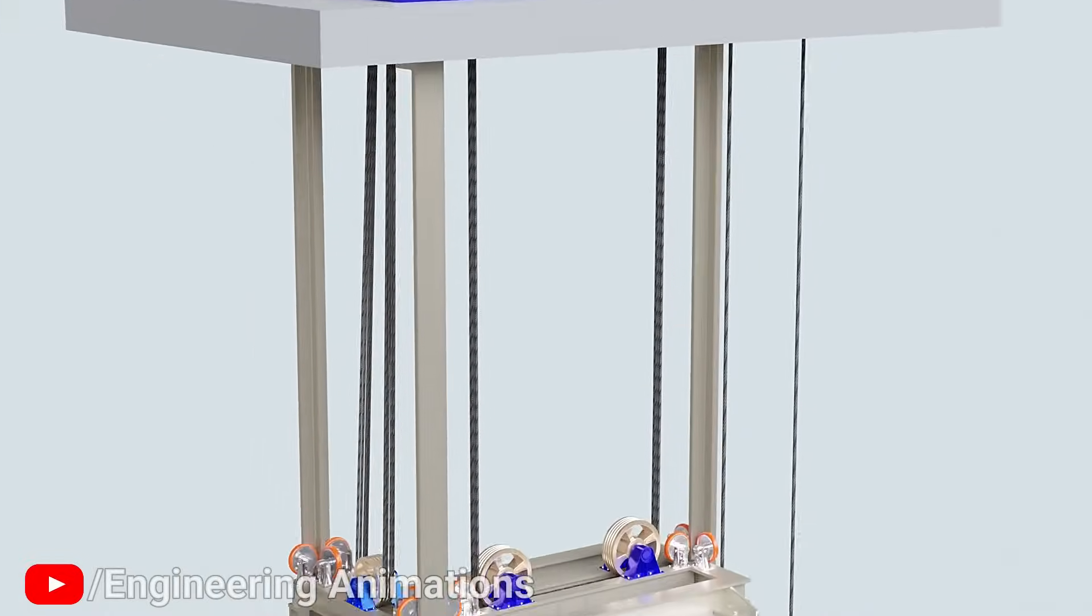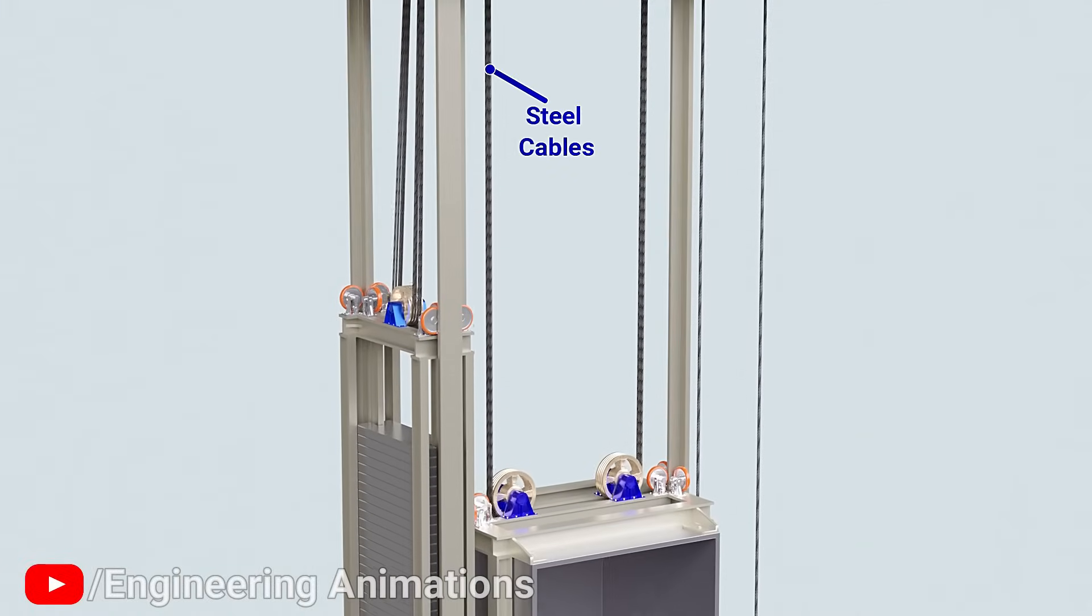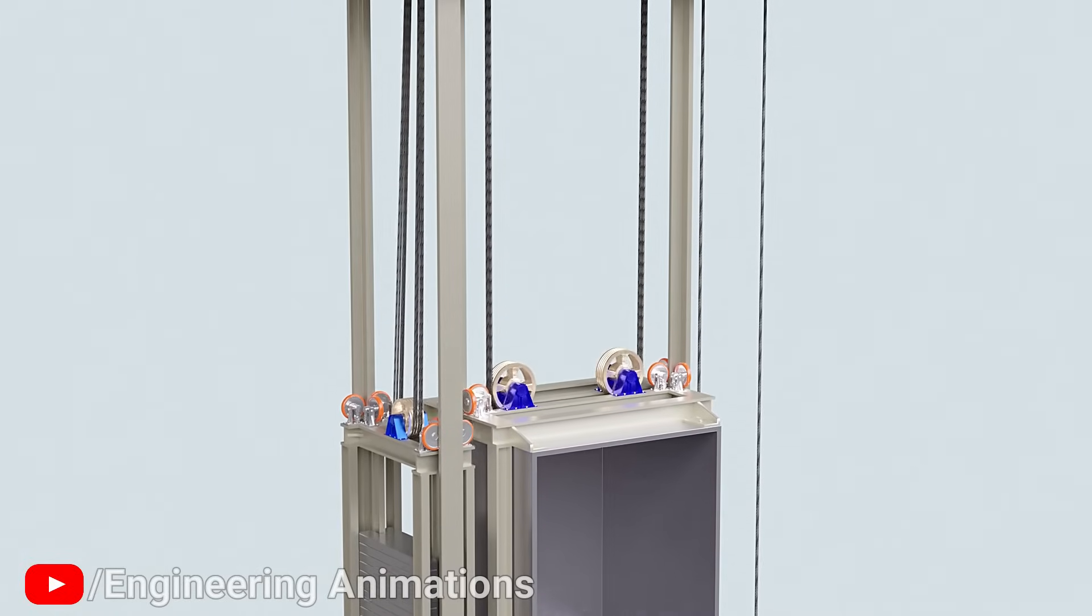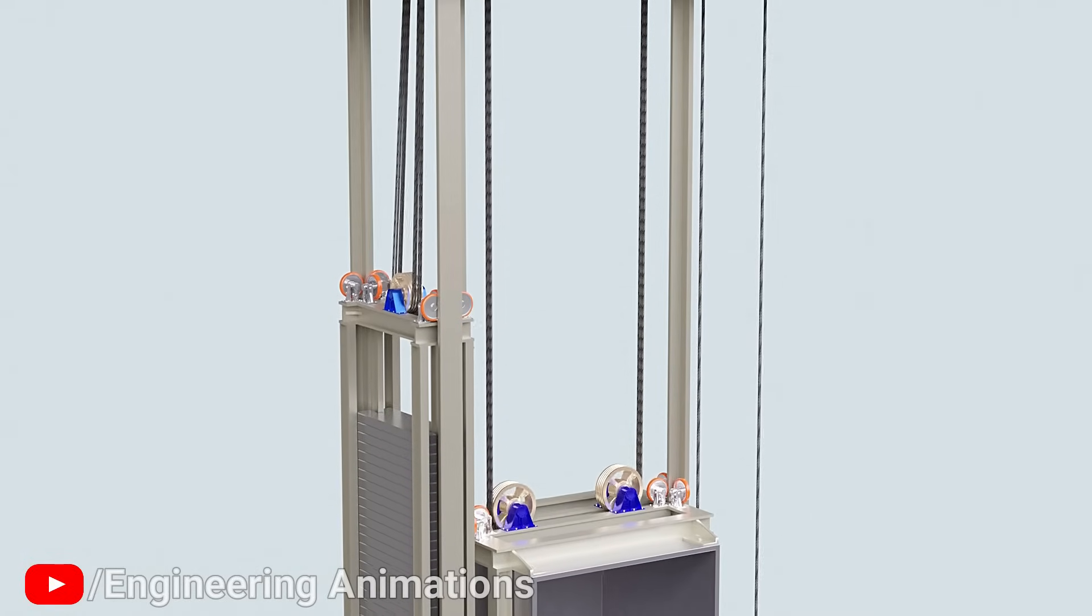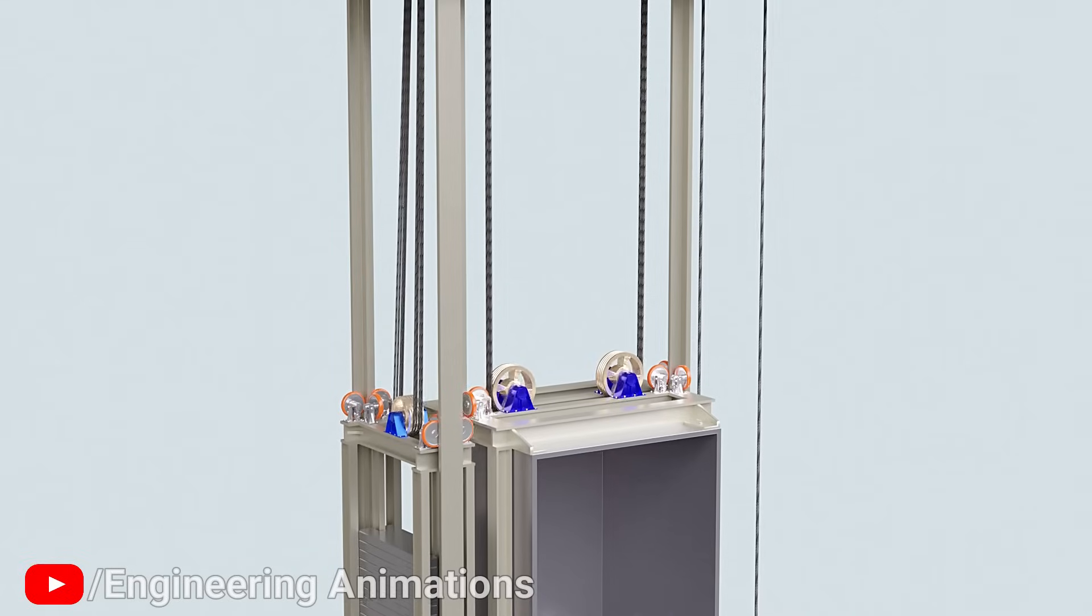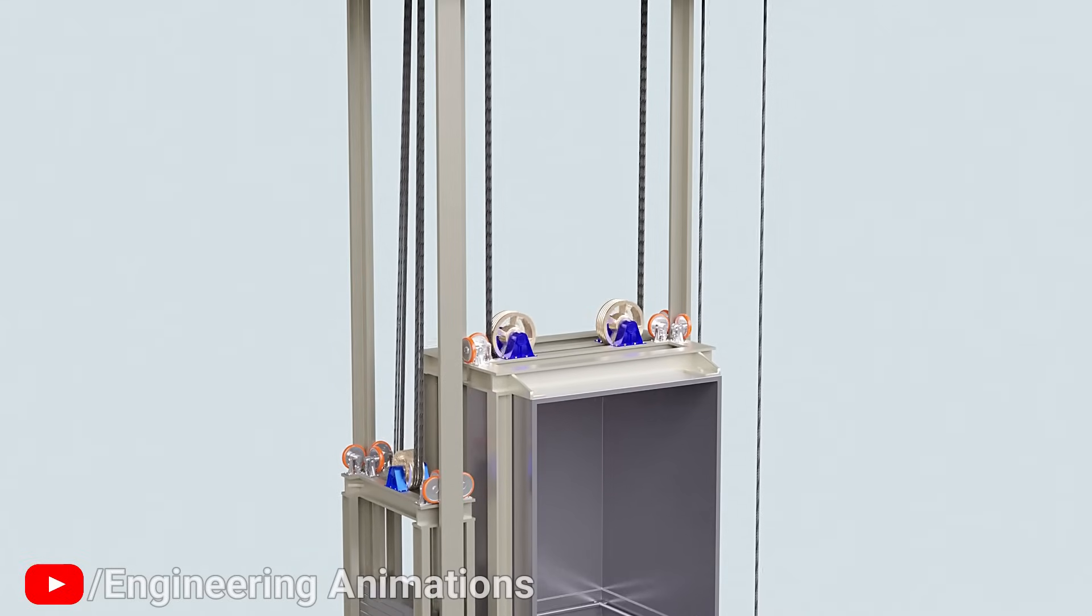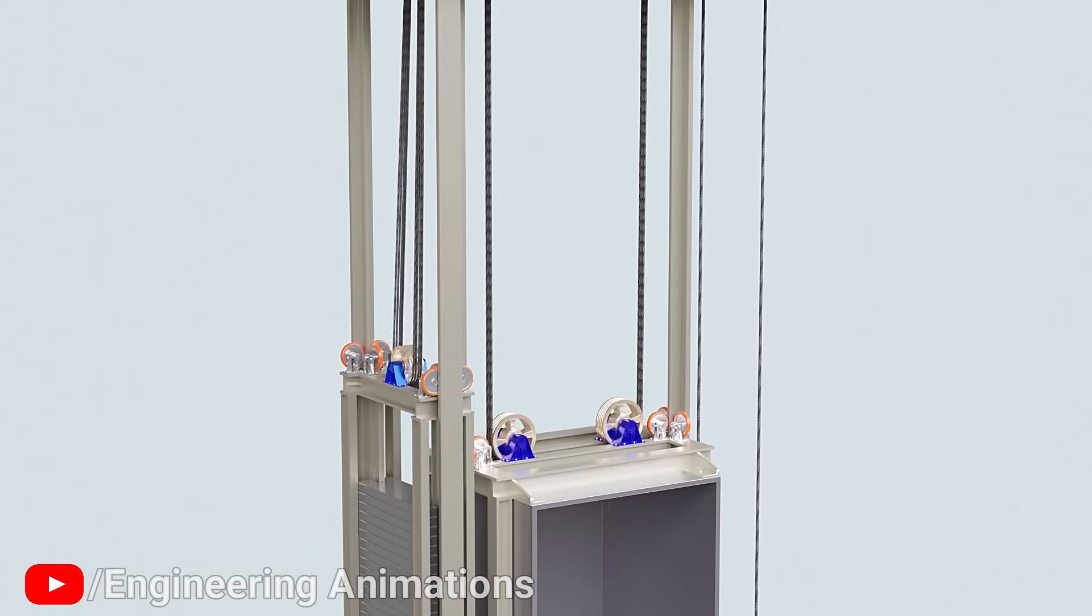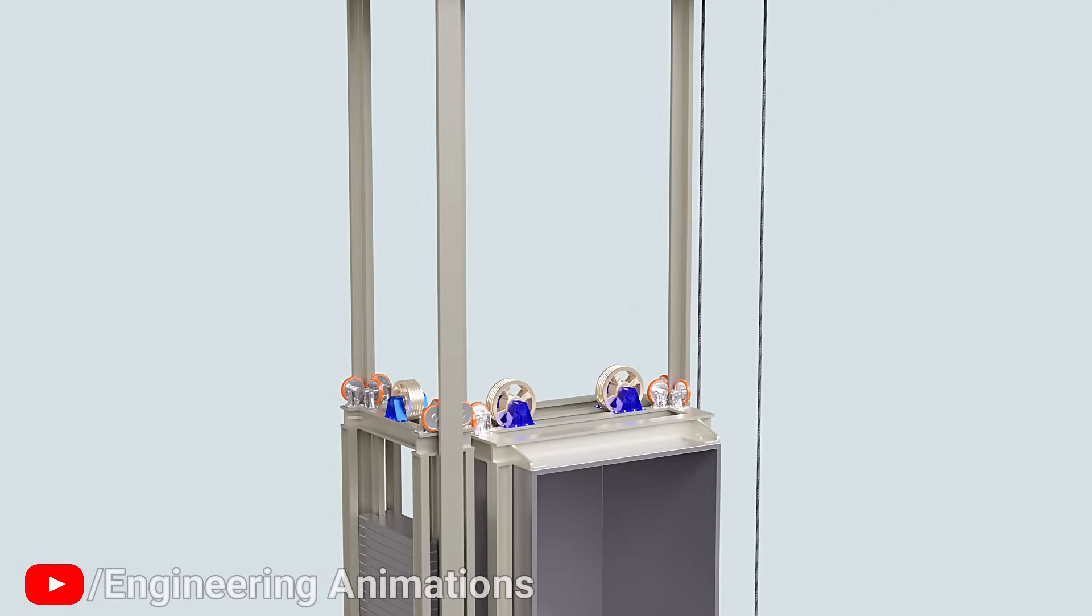Elevators are provided with multiple steel cables to hold the carriage and the counterweight. Technically, only one of these cables can hold more load than the carriage and counterweight combined. Multiple cables are provided so that the elevator can safely operate, even if a few of them snap accidentally.